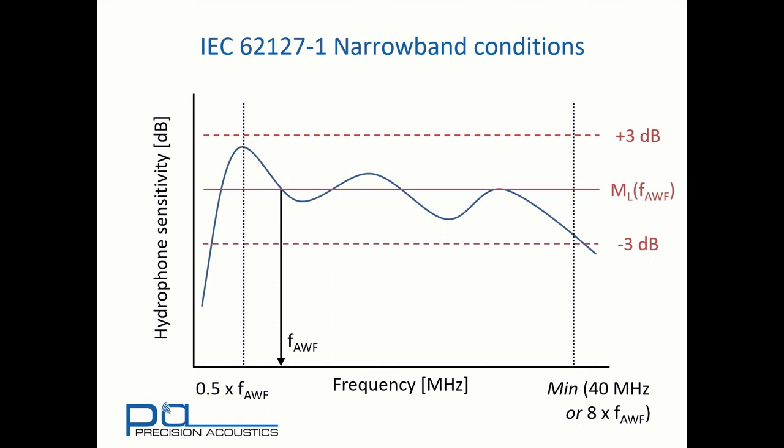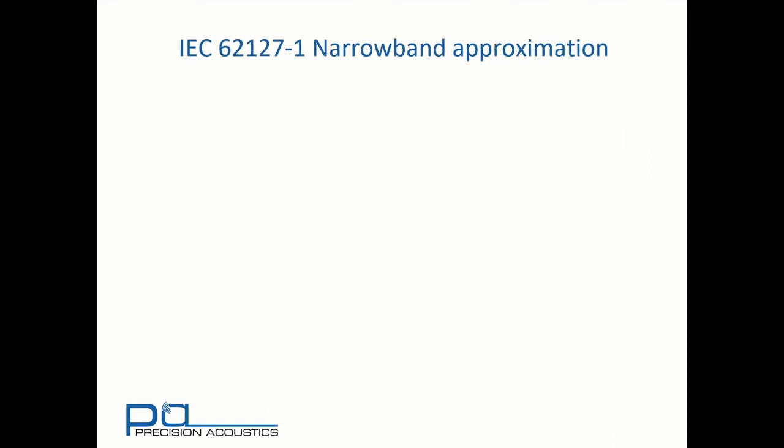This sounds like a lot of work, but let's consider why. If we are able to use the narrowband approximation, we can simply obtain the pressure waveform by dividing the voltage waveform by the sensitivity at the acoustic working frequency.